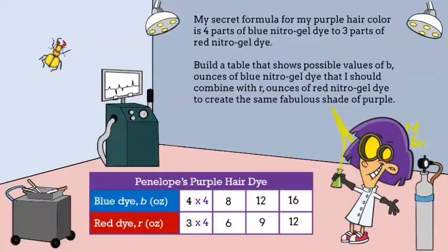16 over 12. You can multiply the numerator and denominator by any number, as long as it's the same number, and the resulting ratio will be equal to your first ratio.